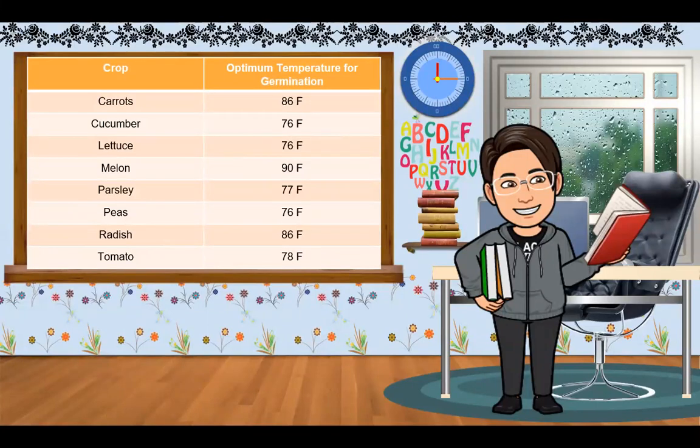We have 8 crops with different optimum temperatures for germination. Carrots, 86 Fahrenheit. Cucumber, 76 Fahrenheit. Lettuce, 76. Melon, 90. Parsley, 77. Peas, 76. Radish, 86. And tomato, 78.